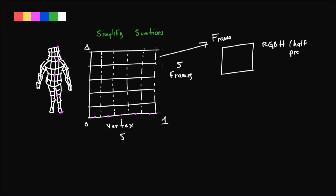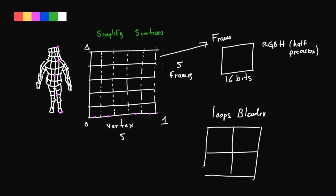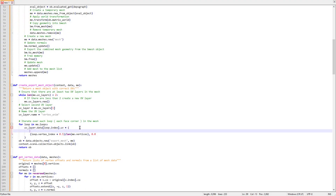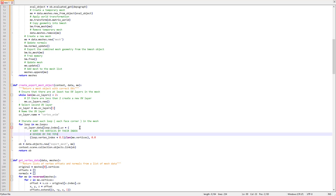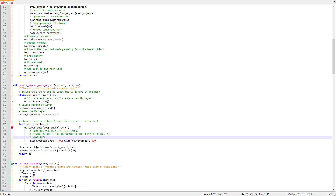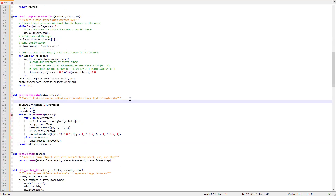As I understand the loops in Blender, you have four faces that correspond to one vertex in the UV coordinates, so you have to set the four corners to the same vertex. Now I am going to write a description. First I sort the vertices by their index, then I divide the total to normalize their position from 0 to 1, then move them to the bottom of the UV layer as I did before.